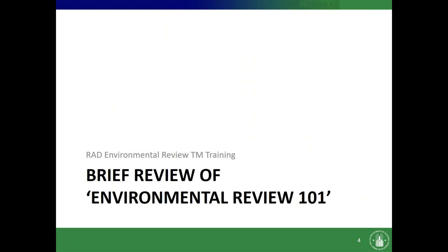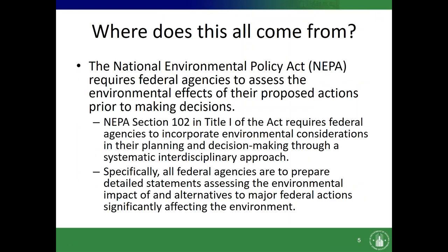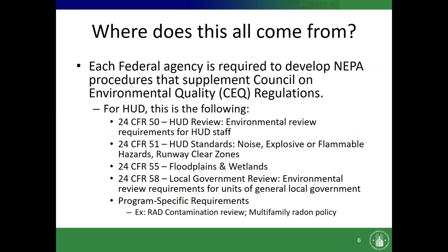Getting started on a brief review of environmental review 101 — where does this all come from? Basically, the National Environmental Policy Act is a law that requires federal agencies to assess the environmental effects of their actions. It basically says: hey, federal agencies, you do stuff with federal money, and we want you to make sure that these won't have ill effects. It provides a framework and decision-making process — basically stipulates how agencies are supposed to prepare detailed statements assessing these impacts.